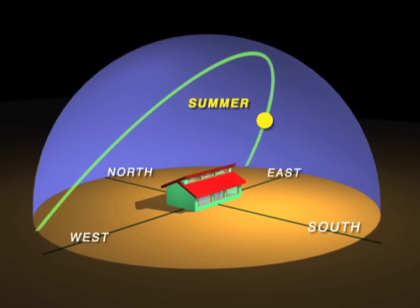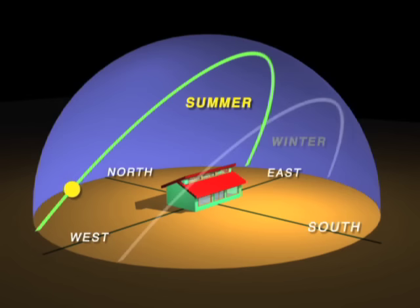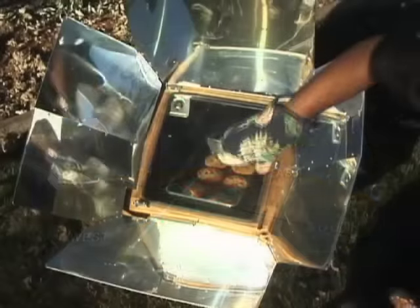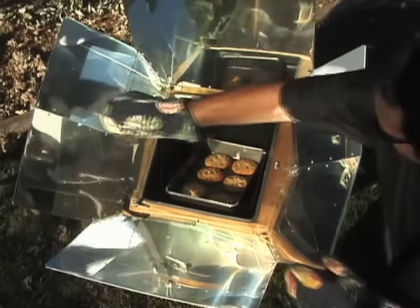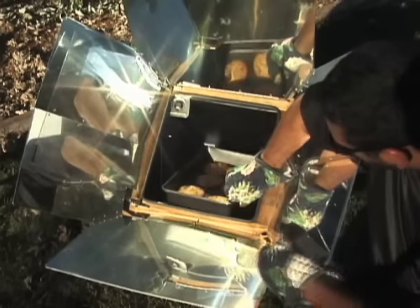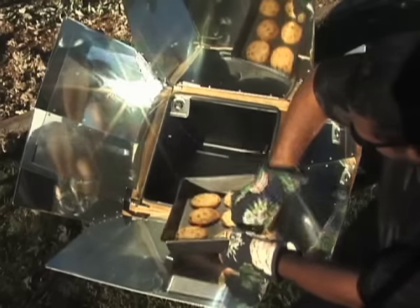The sun rises in the east, arcs across the sky, and sets in the west. Not only that, the sun's actual arc across the sky changes position throughout the year. In the winter in the Northern Hemisphere, the sun's daily path across the sky moves lower toward the south. This isn't a problem with something like a solar box oven — you just face it toward the sun and move it when needed to follow the sun's movement.